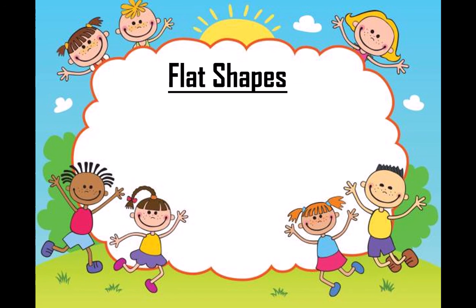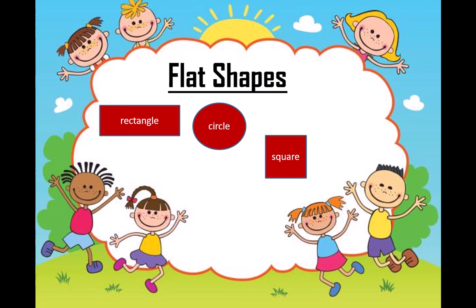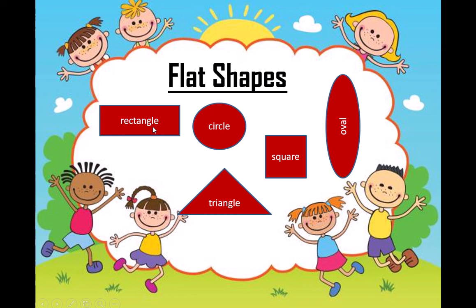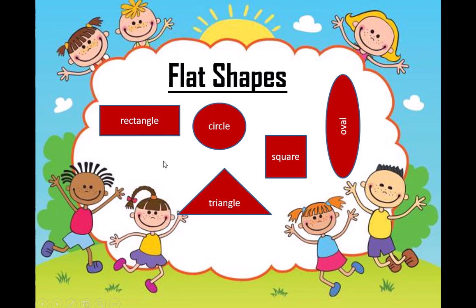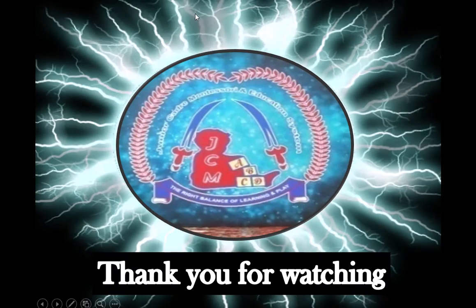So students, today we have learnt about flat shapes: rectangle, circle, square, oval, and triangle. There are five flat shapes. You all need to learn the spelling of these shapes, and you need to recognize these shapes. Look around at your home and find out more objects related to these shapes. Thank you so much, Allah Hafiz.